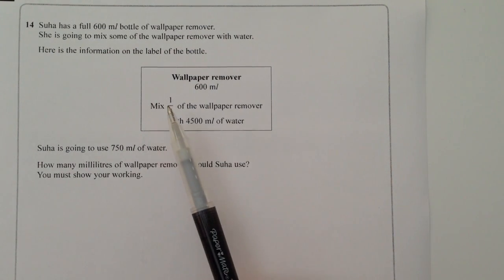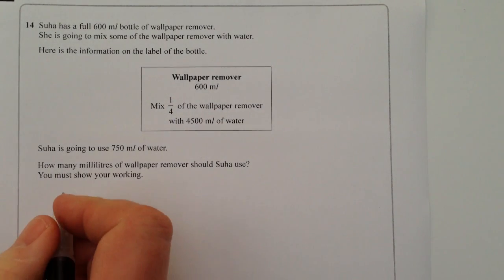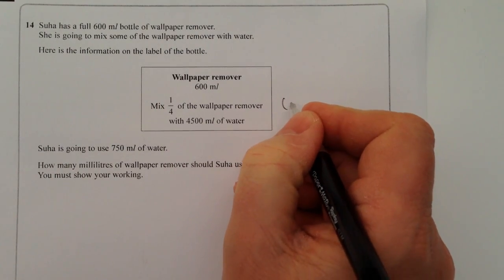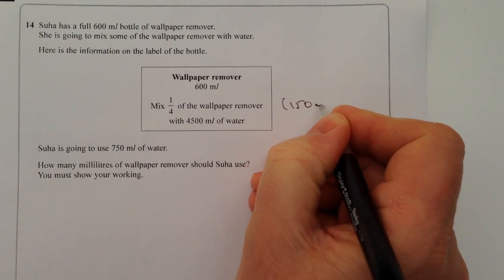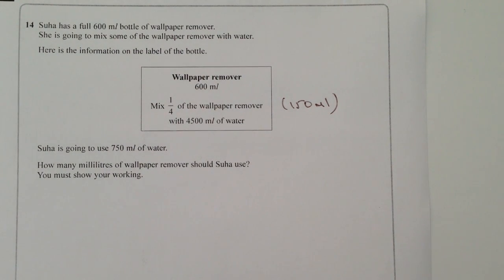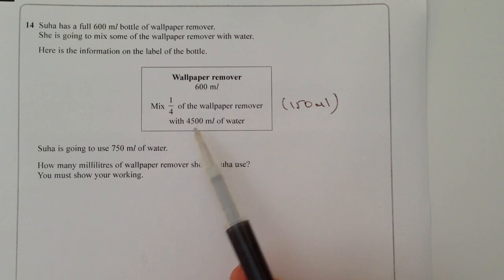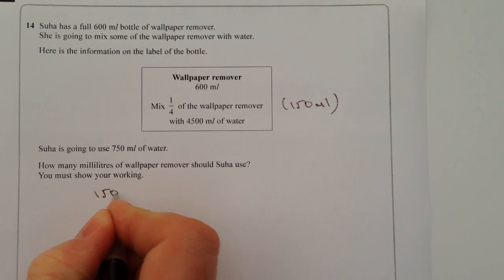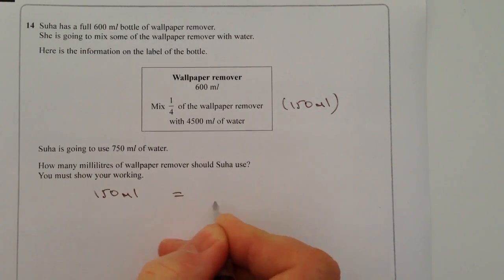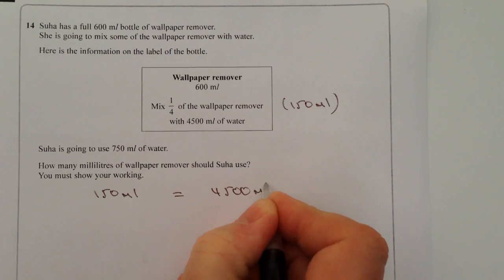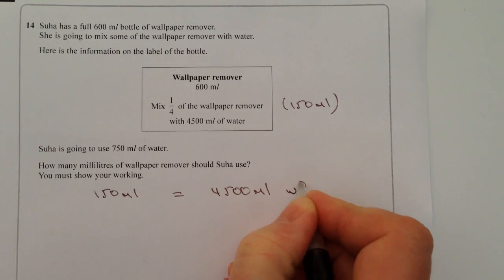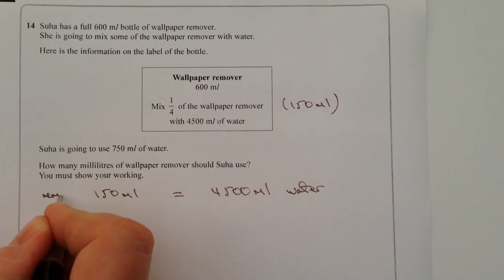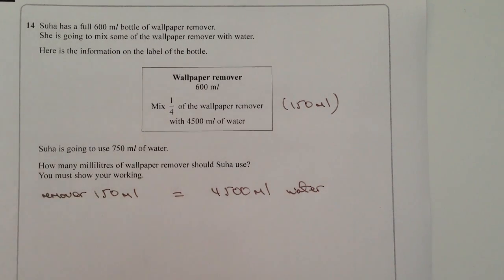Okay, well if she's got this situation where a quarter of the wallpaper remover would mean that she's going to mix 150ml of the wallpaper remover, because she's going to mix a quarter of it and that's going to give her 150ml is going to be equal to 4,500ml of water. So this is the remover and this is the water.